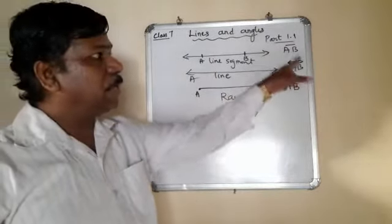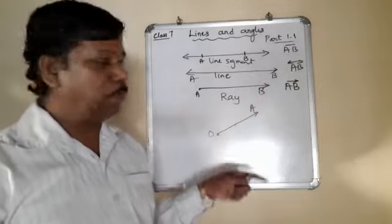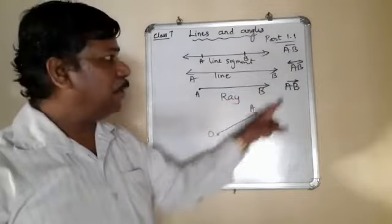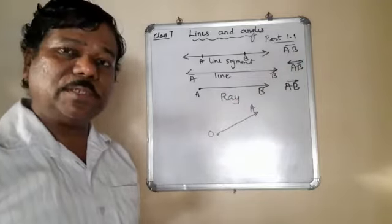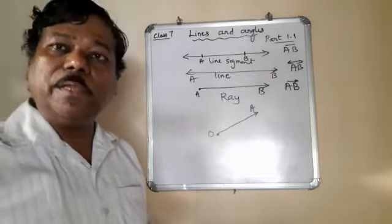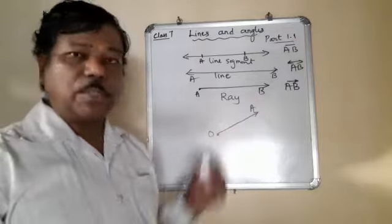Segment AB is given that notation. Line AB is given a two-headed arrow notation. Ray AB is given a notation showing from which direction to which direction, that is where is the beginning point and where it is continuing. This is the notation.